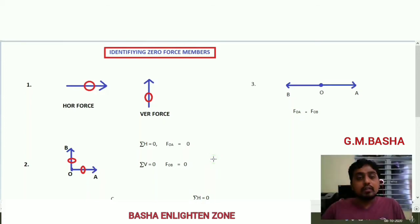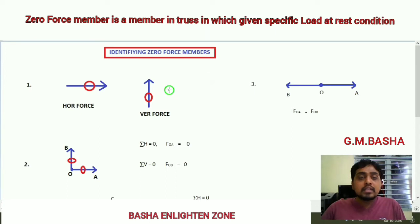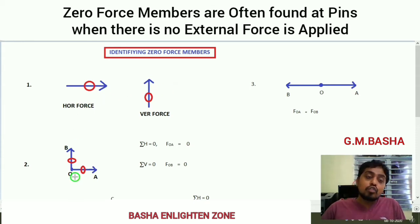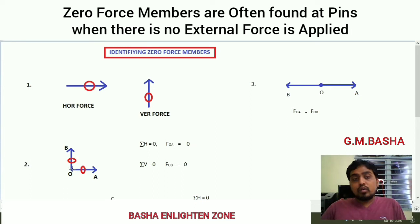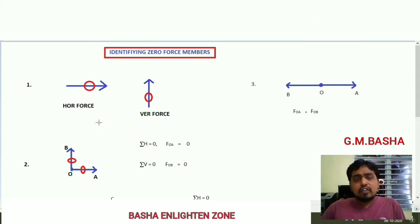Hello friends, welcome to our channel. In this lecture, I would like to show how to identify zero force members. A zero force member is a member in a truss which, under given specific load conditions, is at rest. These zero force members are often found at pins when there is no external load applied. Following are the thumb rules to identify the zero force members.